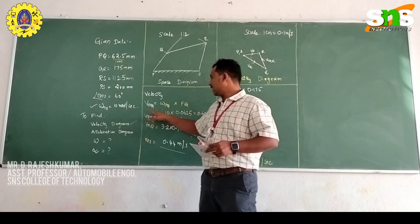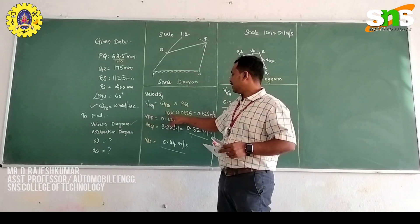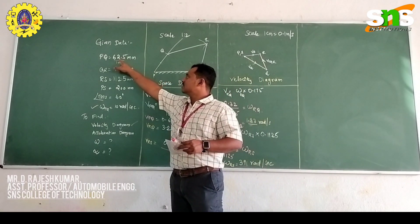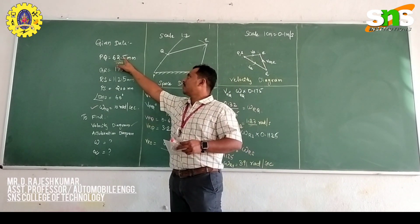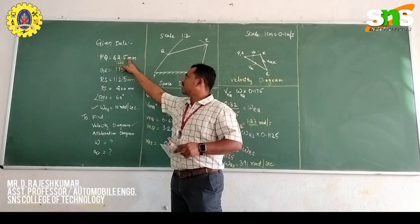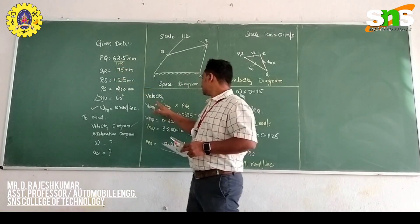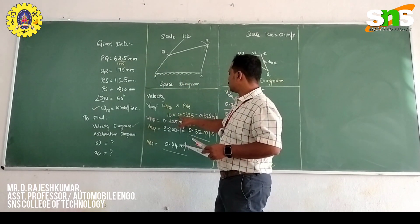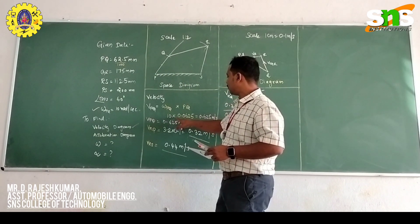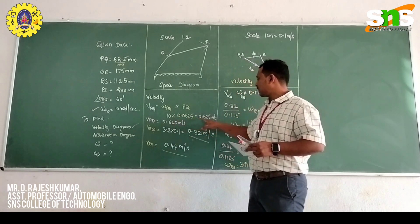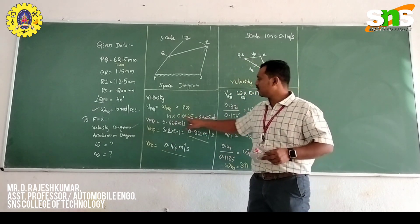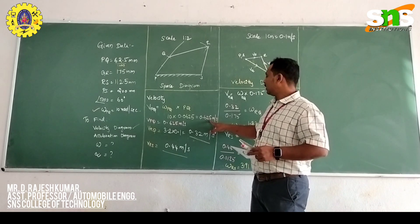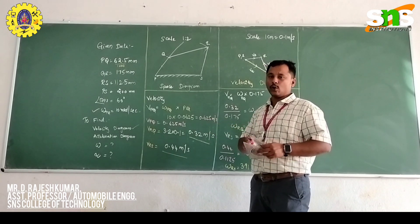The angular velocity of the link is given as 10 radians per second. So velocity = 10 × length of link PQ. The length is 62.5 mm, which we convert to meters: 62.5 ÷ 1000 = 0.0625 m. Multiplying gives us the velocity of link PQ.